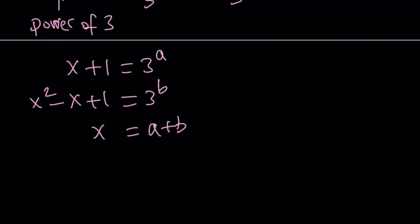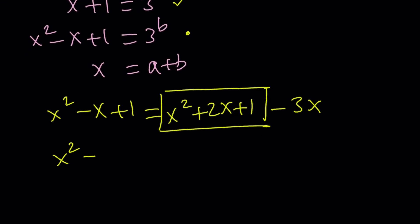Here's what I'm going to do. I'm going to express the second expression, second equation, in terms of the first one. I can write the x squared minus x plus 1 as x squared plus 2x plus 1 minus 3x. Why did I break it down that way? Because this is x plus 1 squared, and that's exactly what I need.